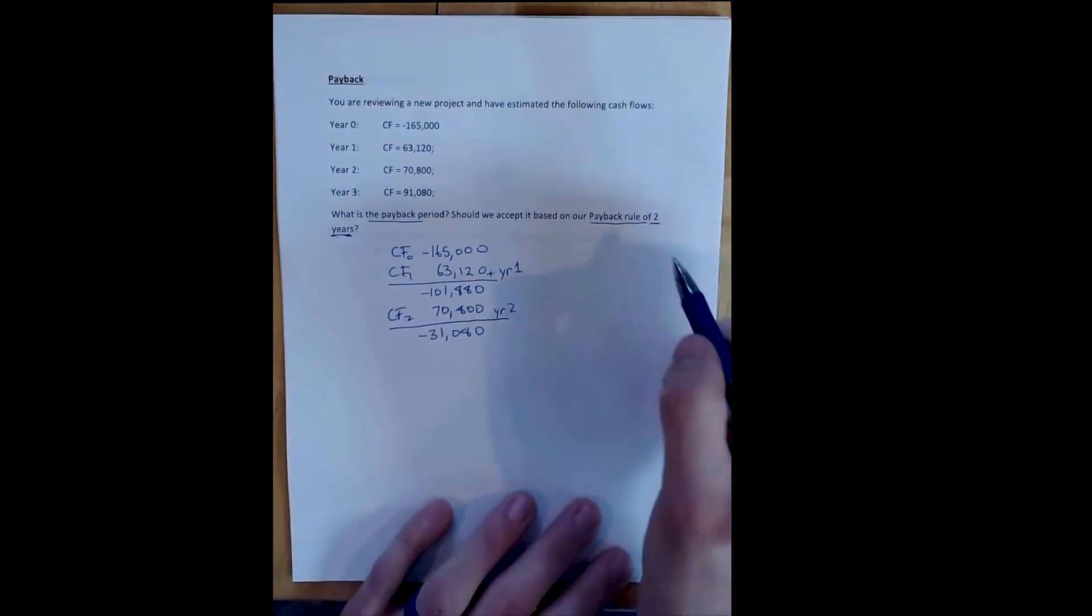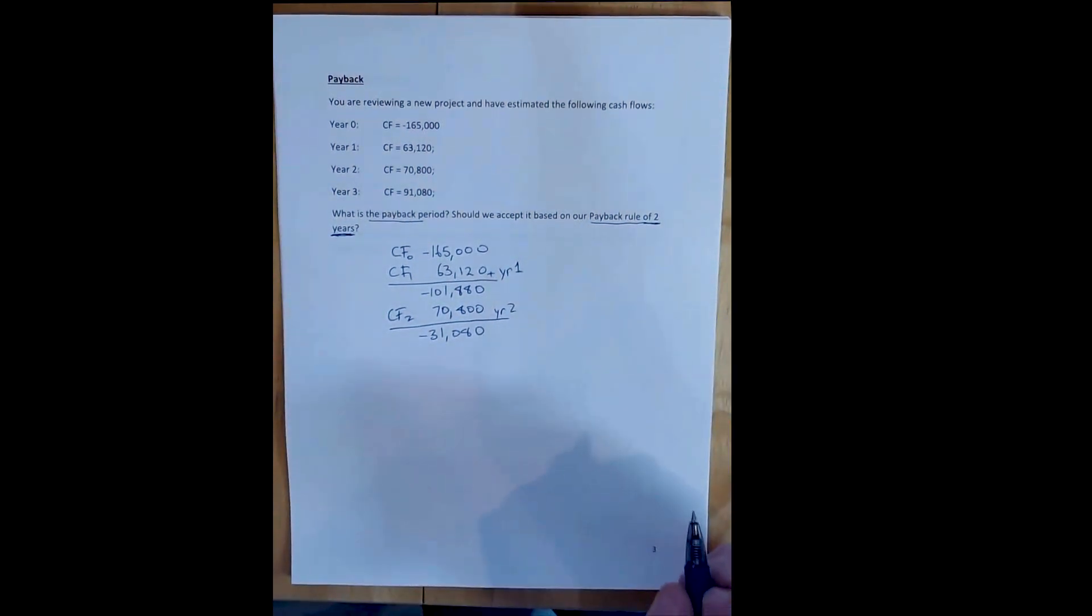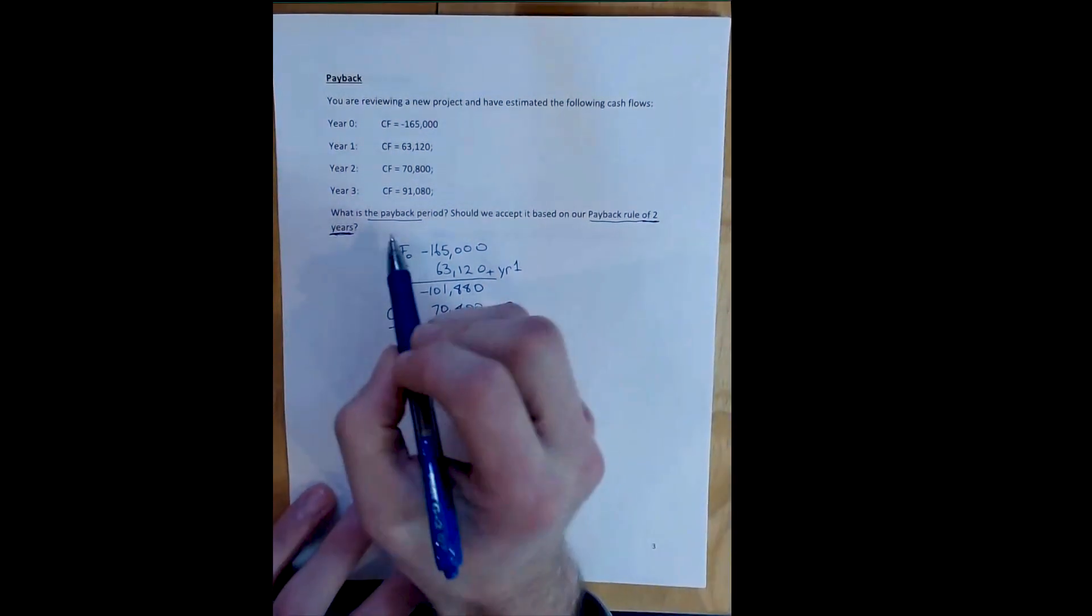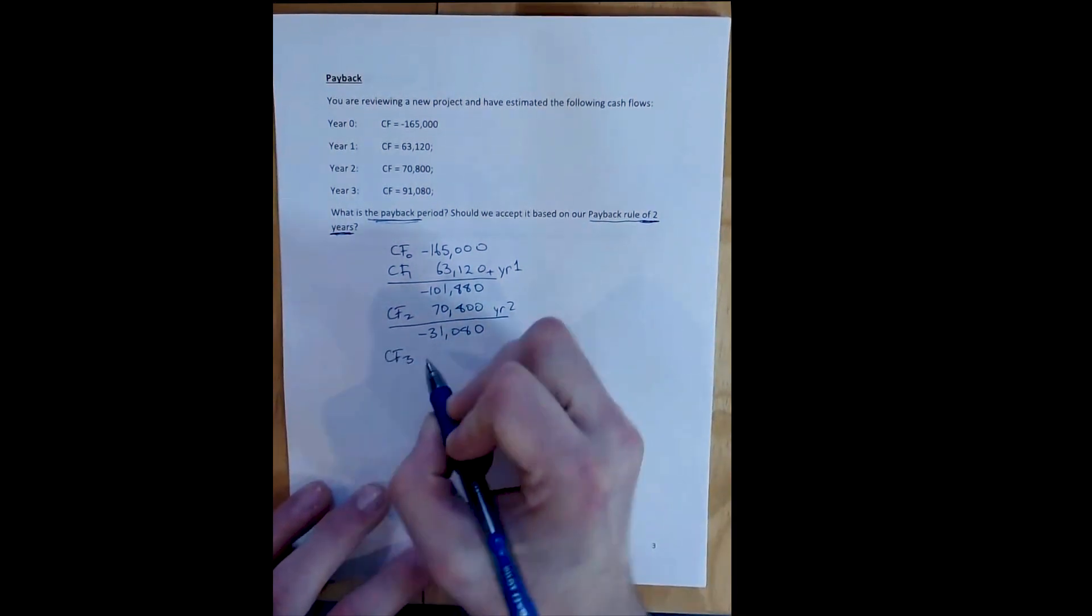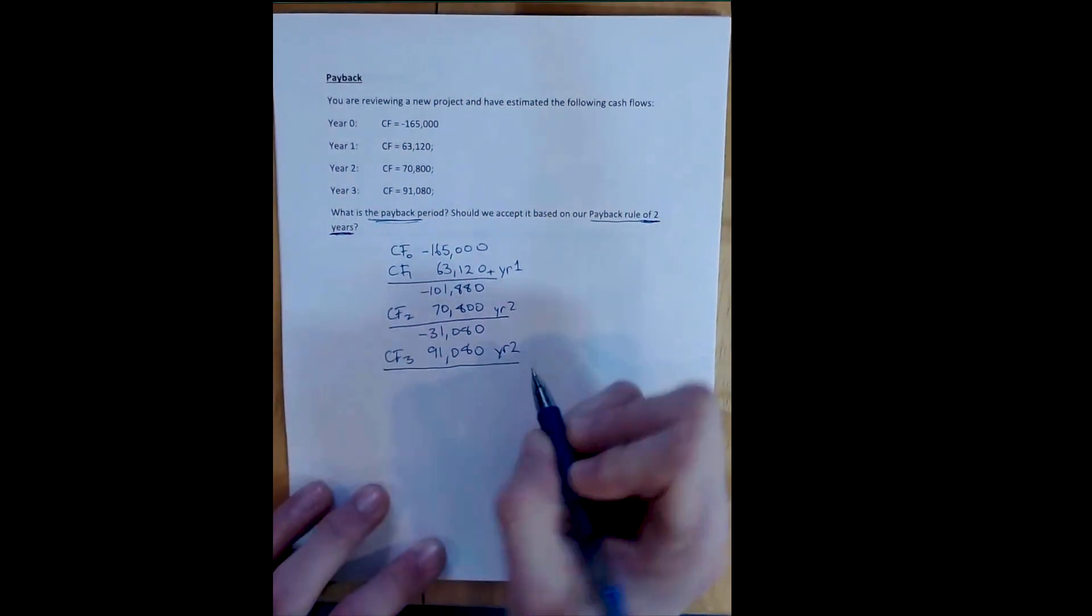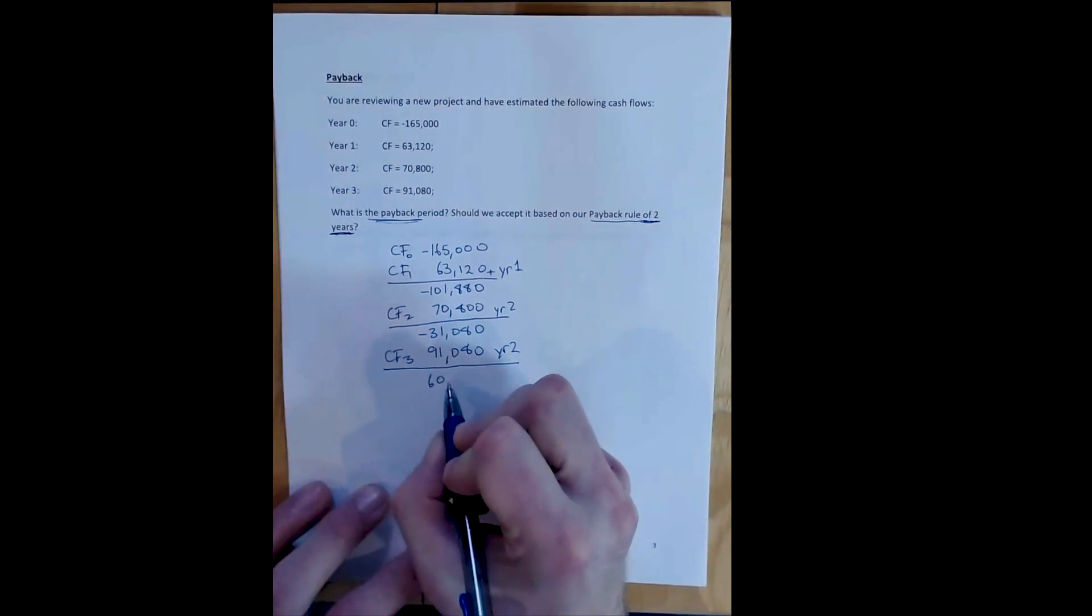We can see right away that because of our arbitrary two-year rule, the project is not going to pay back in two years because the positive cash flows won't have equaled the negative cost. So based on the payback period rule, we would reject. But we have two parts of the problem - we still want to know what the actual payback period is, how long it takes, even though we know we're going to reject in part two. We add the final cash flow, $91,080, and we can see that we will certainly pay back in year three.